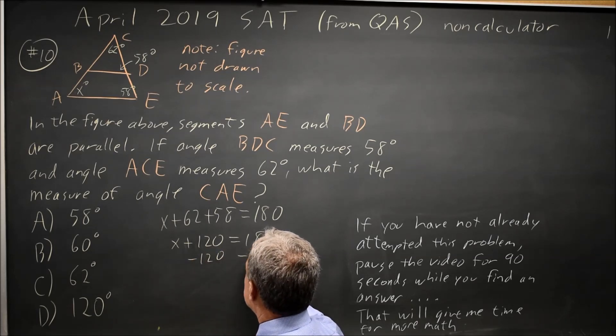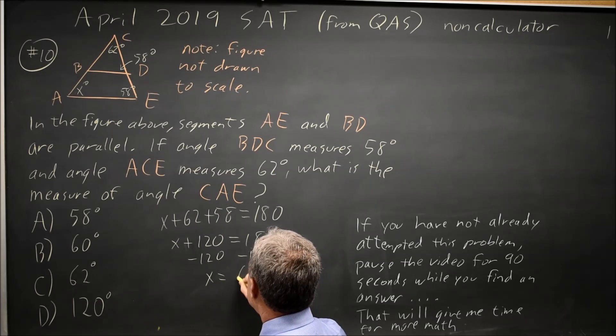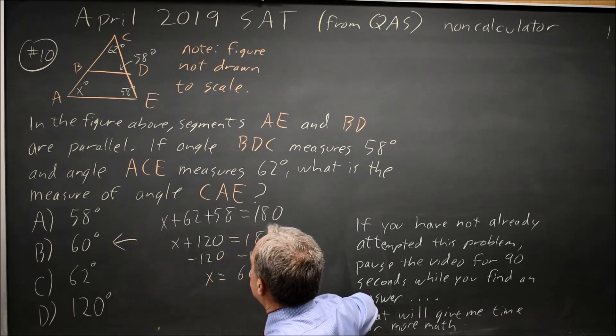And now if I subtract 120 from both sides, I get X equals 180 minus 120 is 60. That would be choice B.